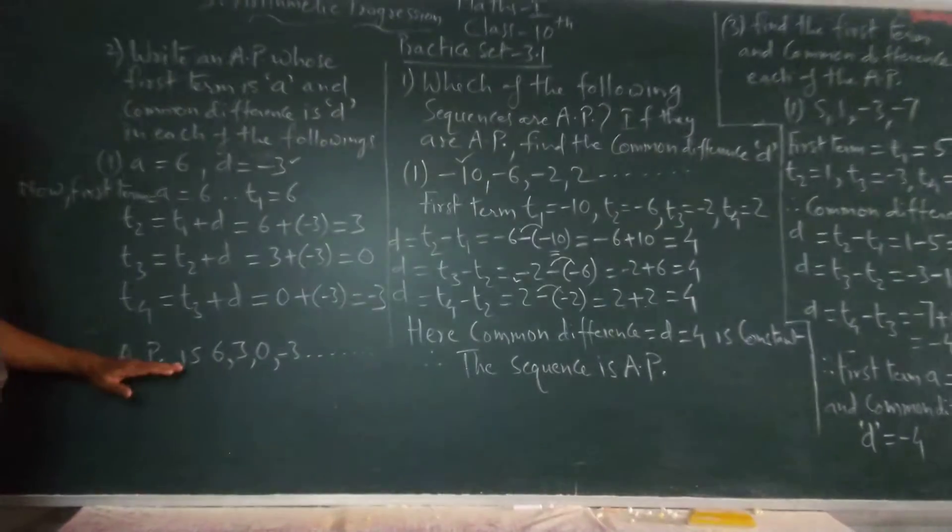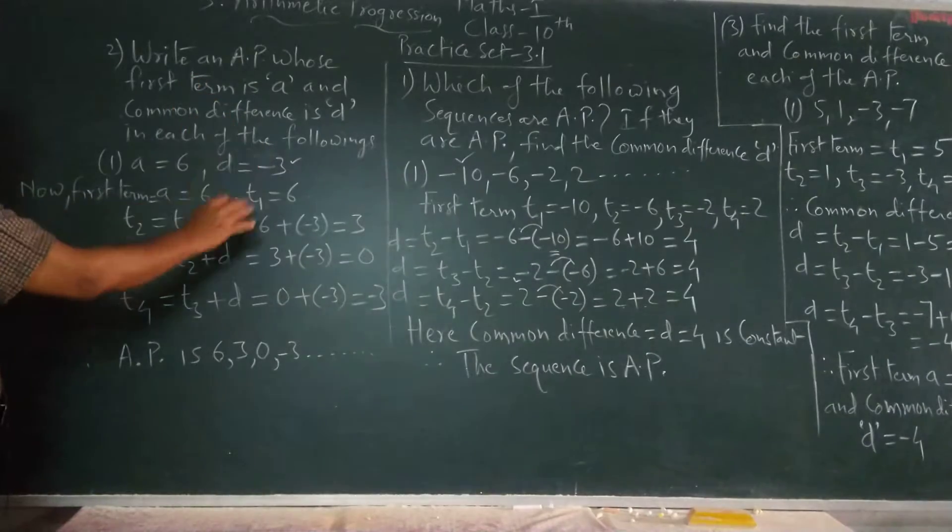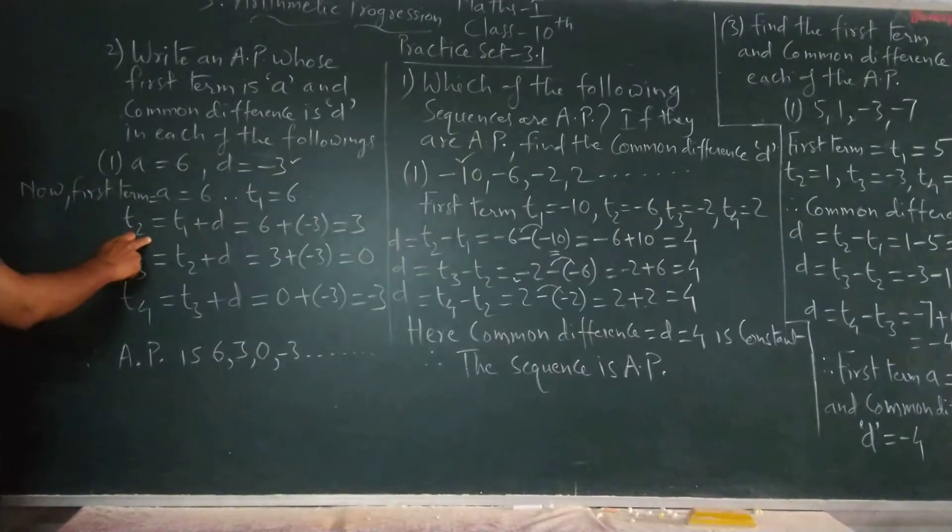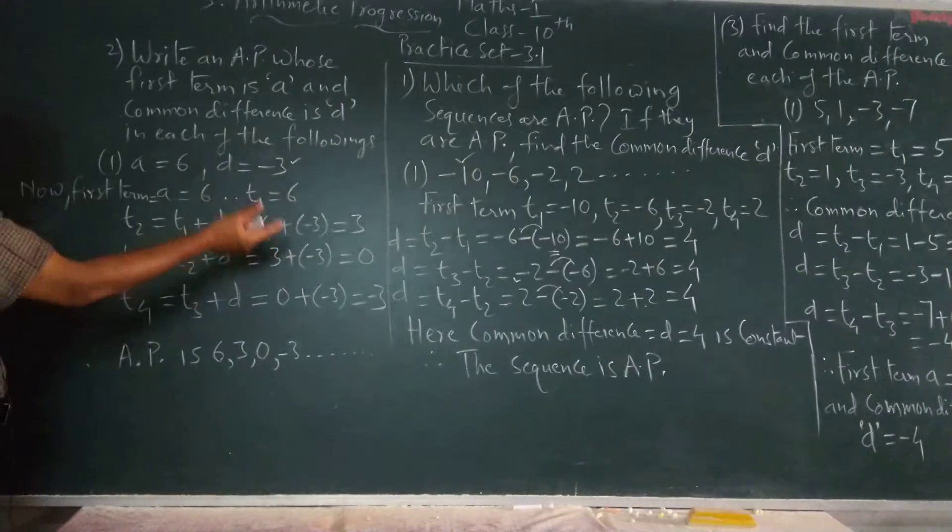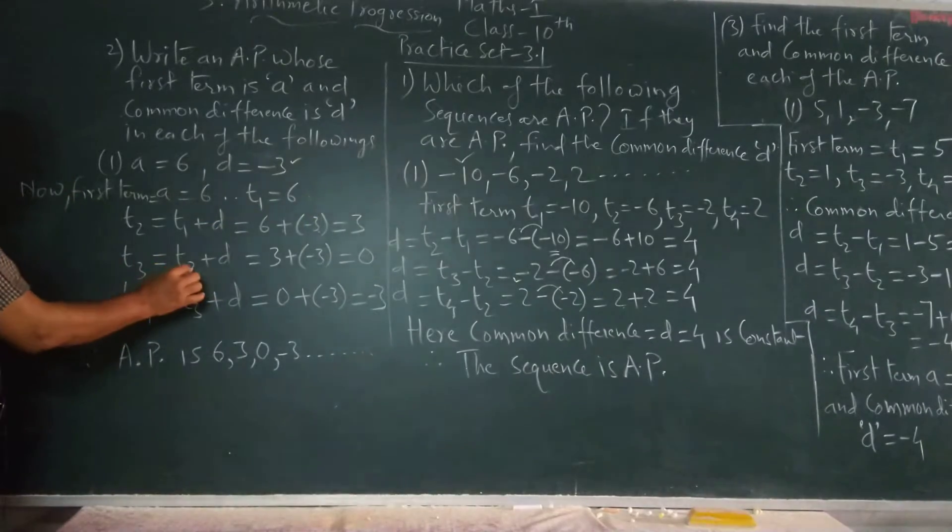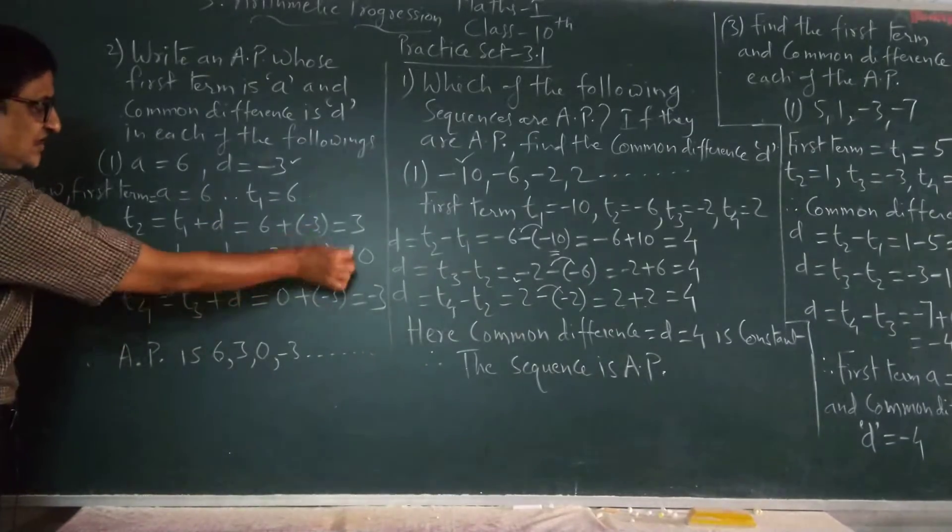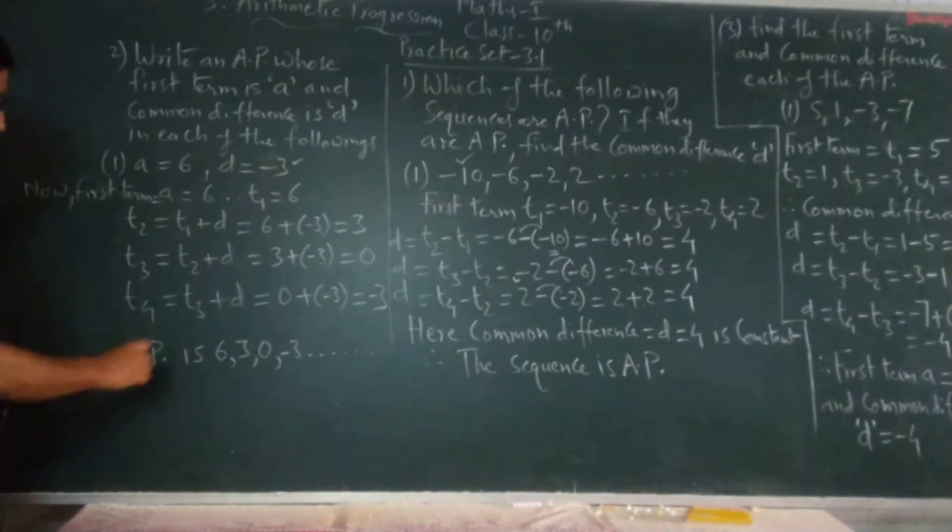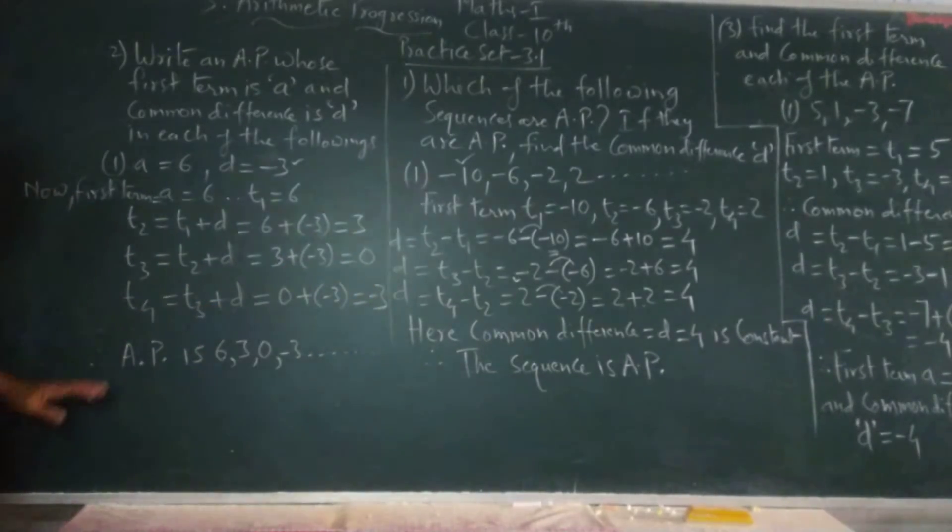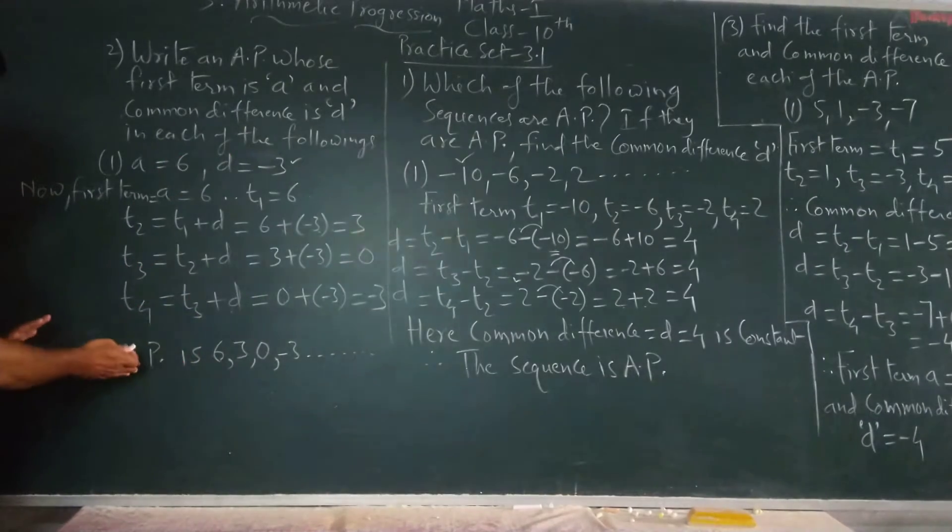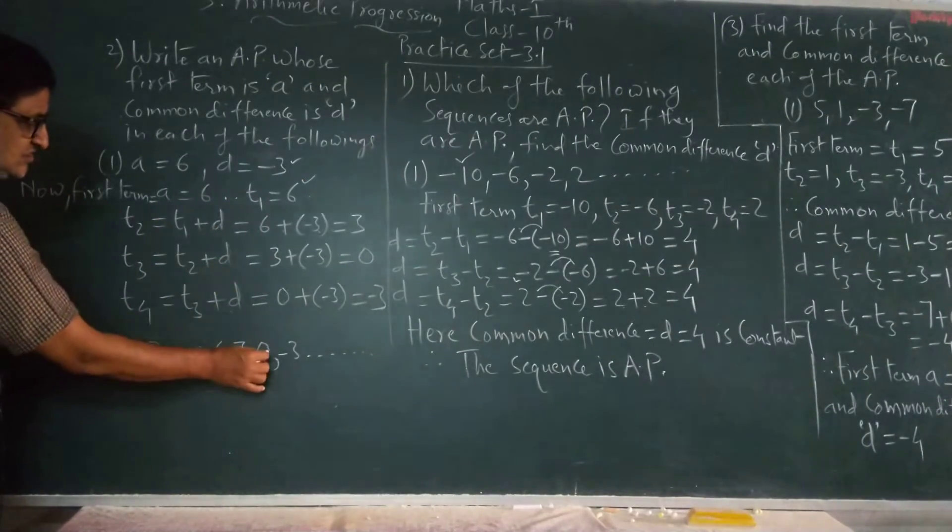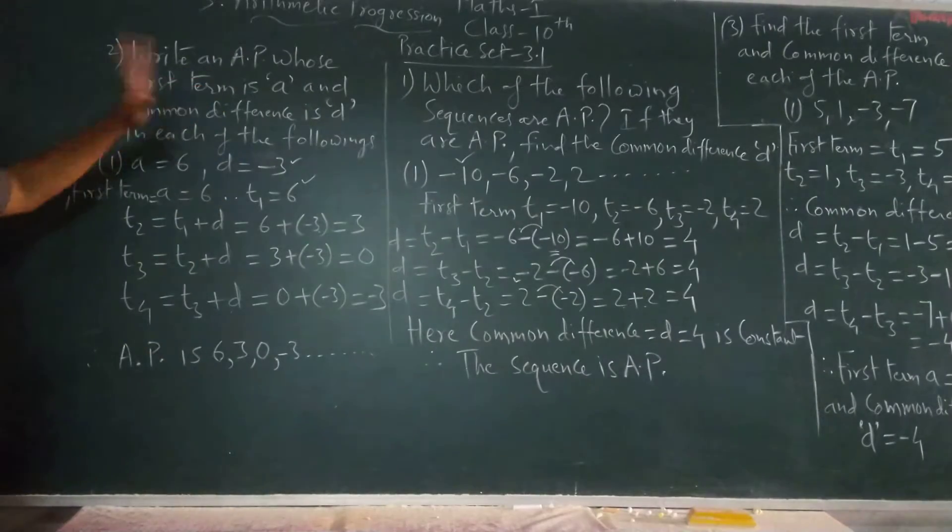The sequence, the first term a, that is T1 is equal to 6. T2 is T1 plus common difference, that is 6 plus minus 3 means 3. T3 is equal to T2 plus d, 3 plus minus 3, 0. T4 is T3 plus d, 0 plus minus 3 meaning minus 3.